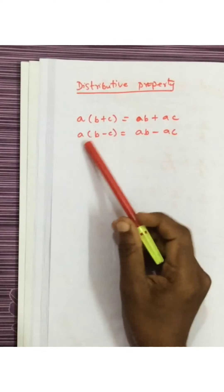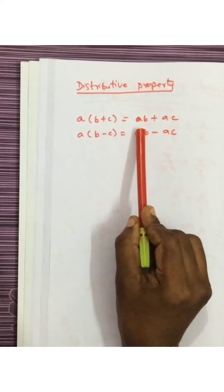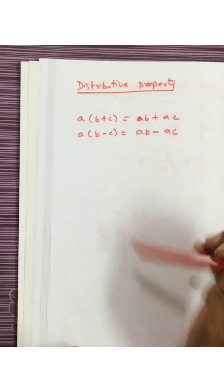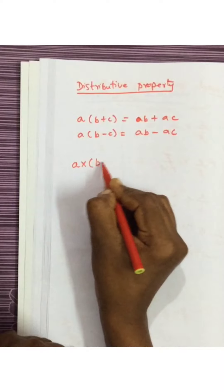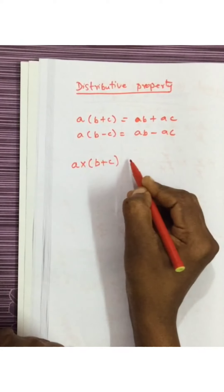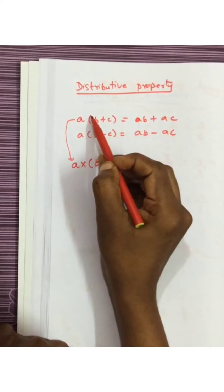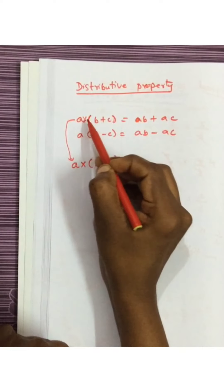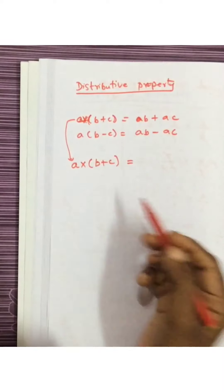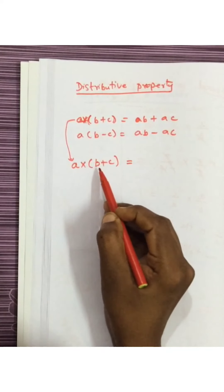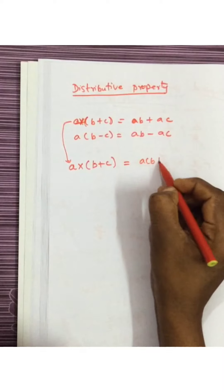We can see A multiplied by B plus C will give AB plus AC. When you multiply A with B plus C, putting a bracket means there is a multiplication — no need to explicitly represent that. So A multiplied by B plus C is the same meaning as A into B plus C.